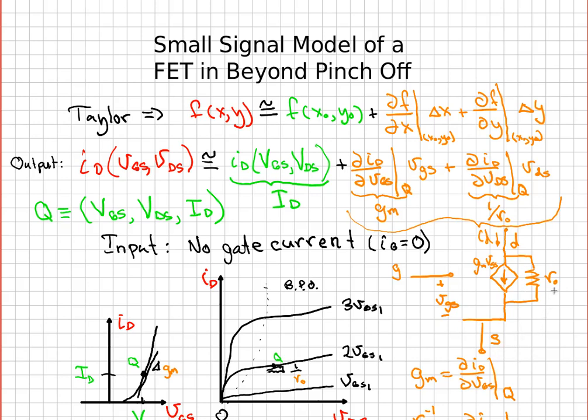Often we can neglect this little r sub little o. It comes because of the slope on these curves right here in the beyond pinch-off region. You can see it right here: one over r sub o is that slope at the Q point.